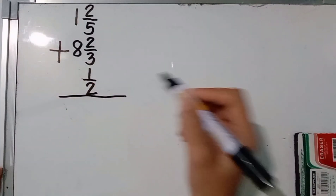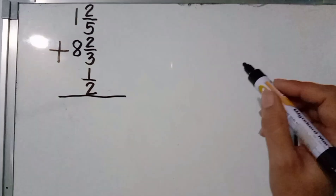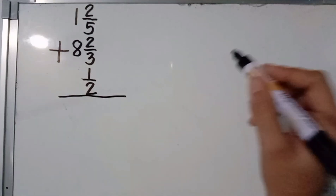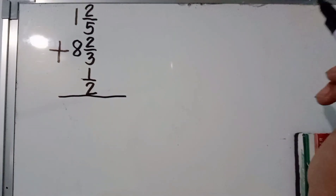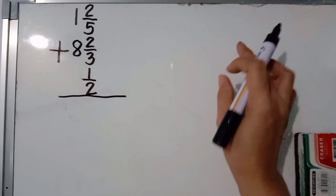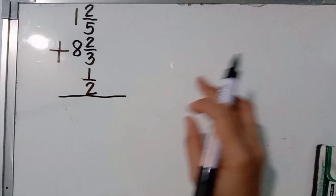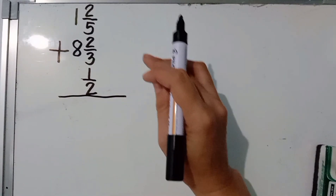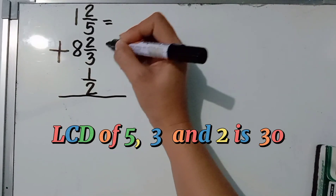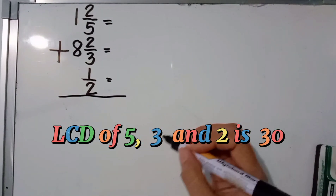Next, we are going to find the LCD of the denominators 5, 3, and 2. We can use the listing method or the continuous division or ladder method. Going directly, the LCD of 5, 3, and 2 is 30.